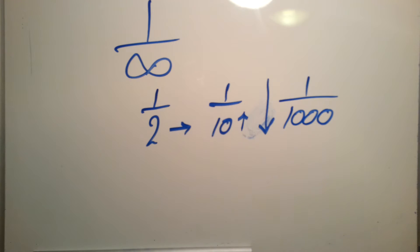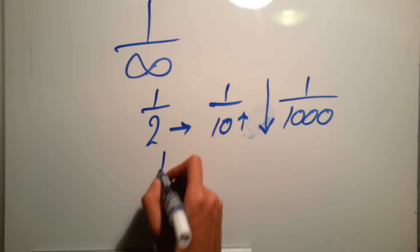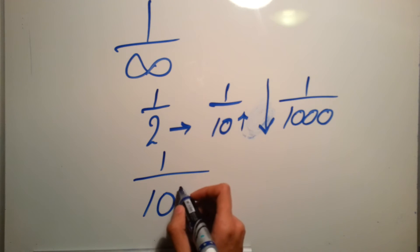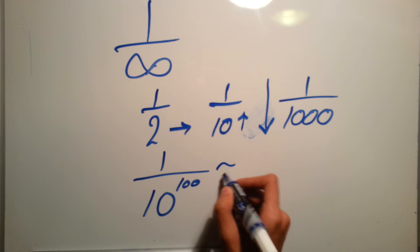And infinity basically means infinity, like it doesn't have an end. So you can tell them, well, let's say if you have one over ten to the hundred, then this is almost infinity and this number is very very small, it's very close to zero.